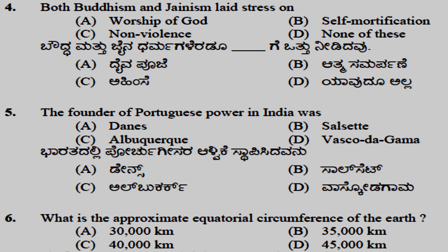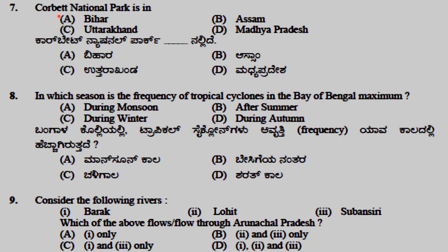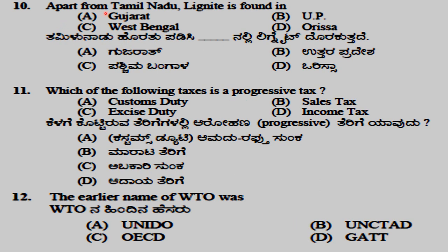The founder of Portuguese power in India was Albuquerque. The approximate equatorial circumference of the Earth is 40,000 kilometers. Corbett National Park is in Uttarakhand. The frequency of tropical cyclones in the Bay of Bengal is maximum during autumn. Among the rivers Barak, Lohith, and Subansiri, both Lohith and Subansiri flow through Arunachal Pradesh.